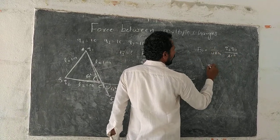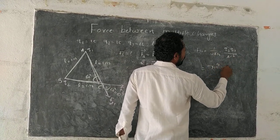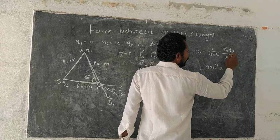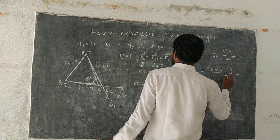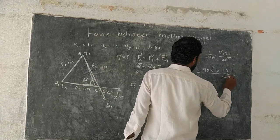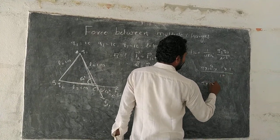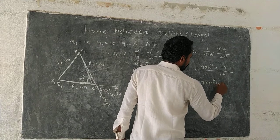And 1 by 4 pi epsilon naught value is 9 into 10 power 9. These two values, Q3 value 1, Q1 value 1. What is the distance of AC? 1 squared. And this is 9 into 10 power 9 newtons.